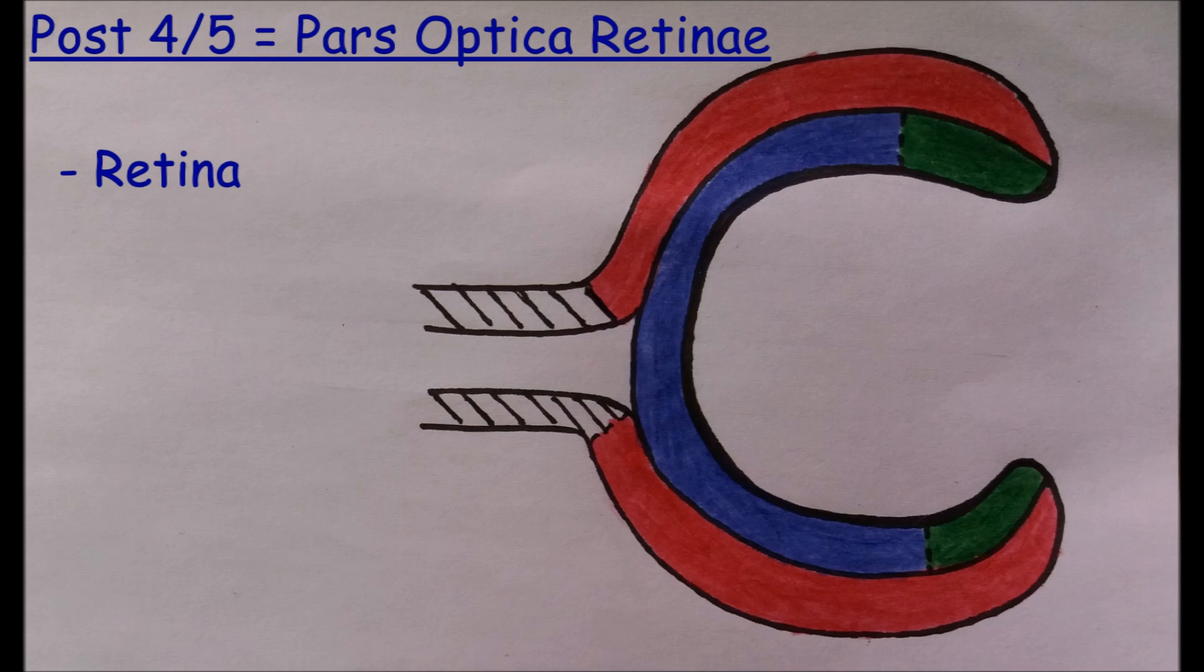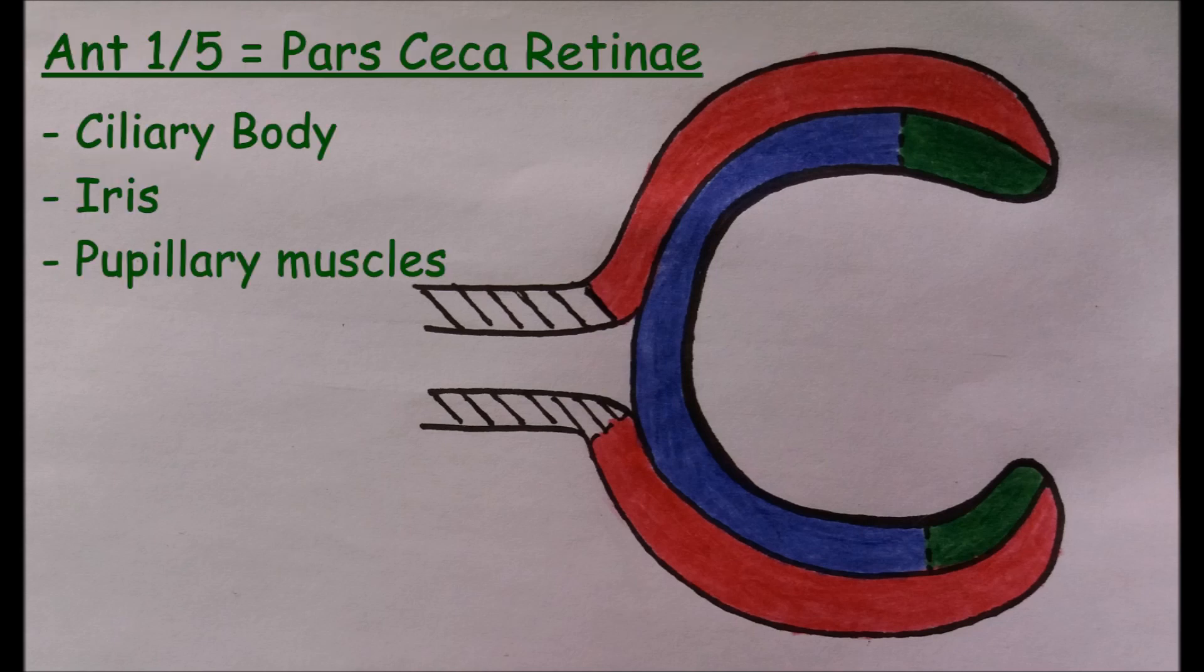The posterior four-fifths is called pars optica retinae. It gives rise to retinae, while the anterior one-fifth is called pars cica retinae which gives rise to ciliary body, iris, and pupillary muscles.